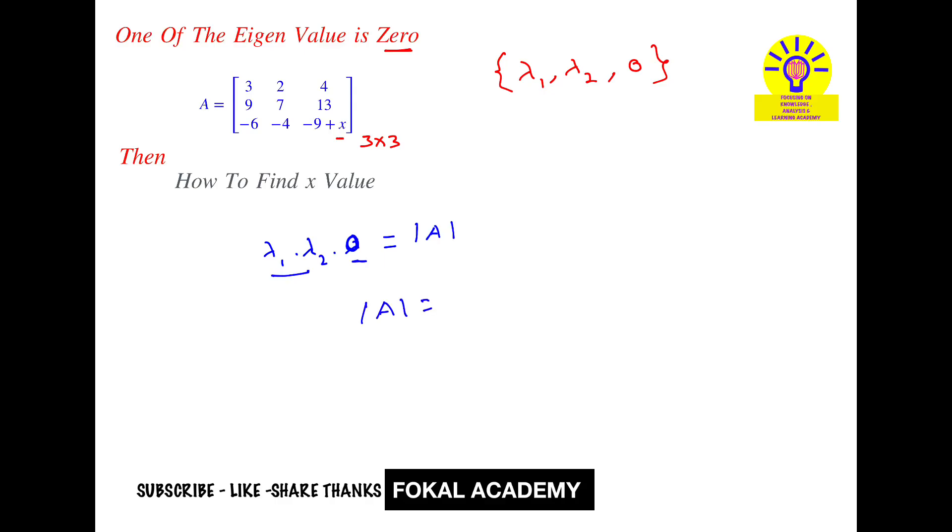So whenever one of the eigenvalues is equal to 0, the determinant of the matrix is always equal to 0. Now find det of the matrix and then set it equal to 0. From that we will get one equation. By simplifying that we will get x value. So let's see here how to do that. Det A equals det of that matrix, that is [3, 2, 4; 9, 7, 13; -6, -4, -9+x], which is 3 by 3.